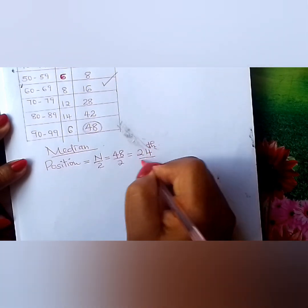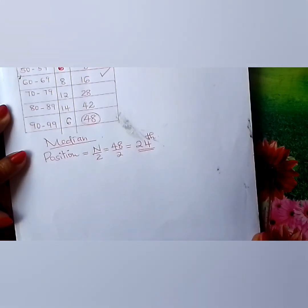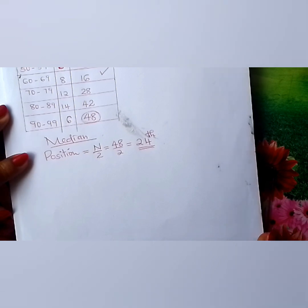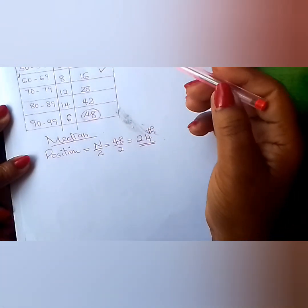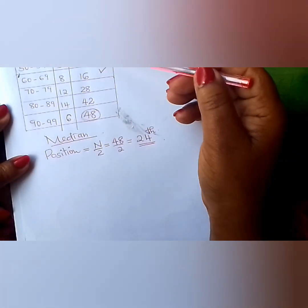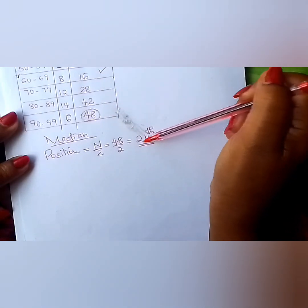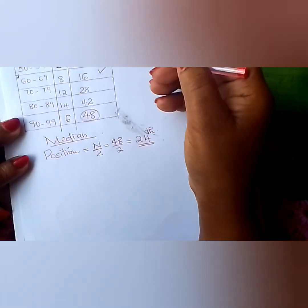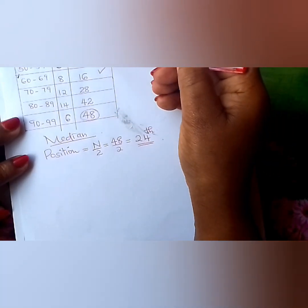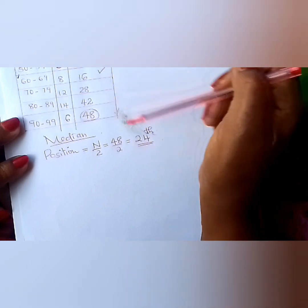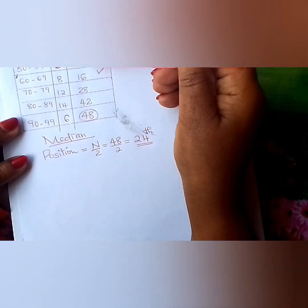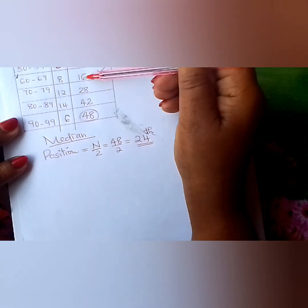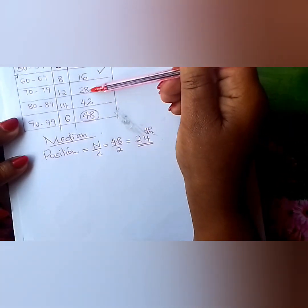The median lies at the 24th position — the 24th student. You check the cumulative frequency column to find the median class. The cumulative frequency values are: 2, 8, 16, 28. We want to reach 24. At 16 we have not yet reached 24, but at 28 we have already passed 24.